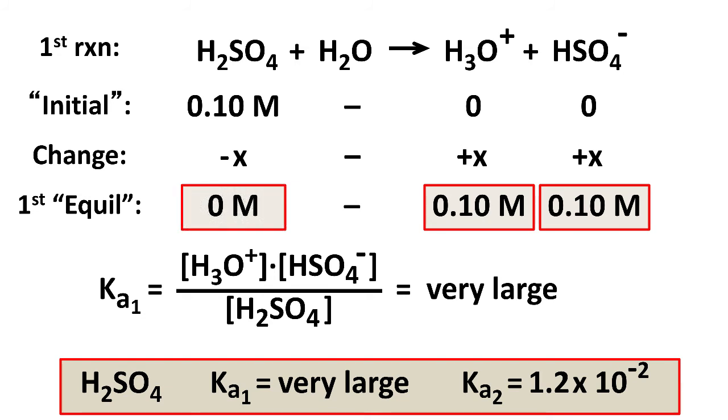And again, if this was a weak first dissociation, we'd actually have to calculate the value of X using the equilibrium constant expression, and whatever the Ka1 value was.